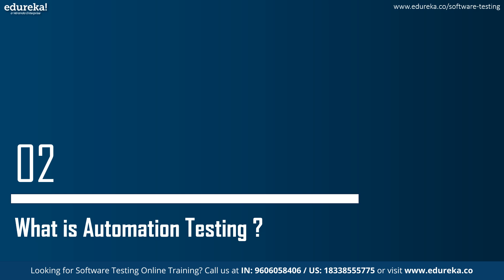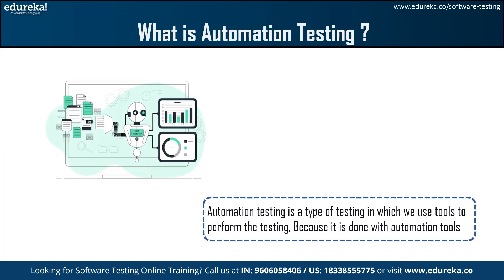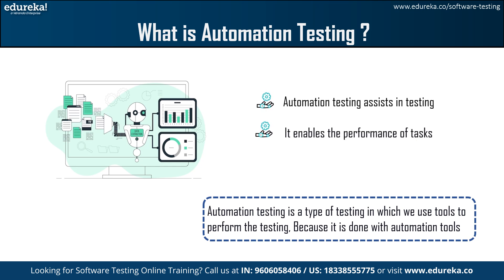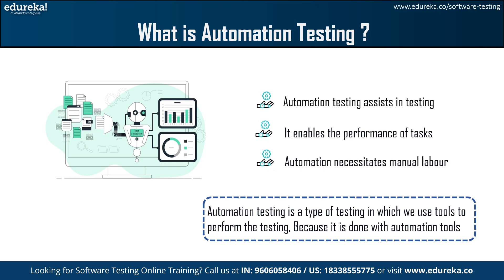We will move on to what is automation testing. It is a type of testing in which we use tools to perform the testing. It is faster than manual testing and there is no room for human error. It depends completely on pre-scripted tests that run automatically to compare actual and expected results. Automation testing assists testers in determining whether or not the application performs as expected. It enables the performance of repetitive tasks, though automation necessitates manual labor to create initial testing scripts.